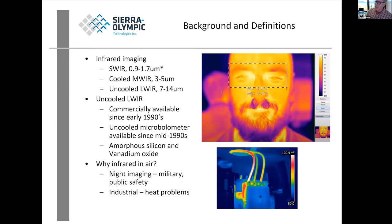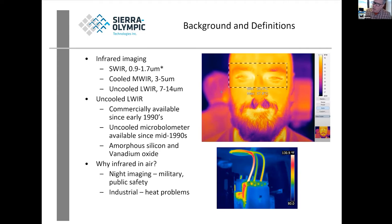Let's talk about infrared imaging. We chunk infrared imaging into three categories: shortwave, midwave, and longwave. Shortwave covers the 0.9 to 1.7 micron wavelength band. Cooled midwave is generally three to five microns, and uncooled longwave — the topic of this talk — is 7 to 14 microns. Uncooled longwave technology was commercially available in the early 1990s, and what we know today as uncooled microbolometer technology came around the mid-1990s.